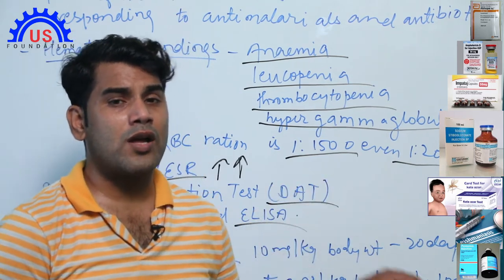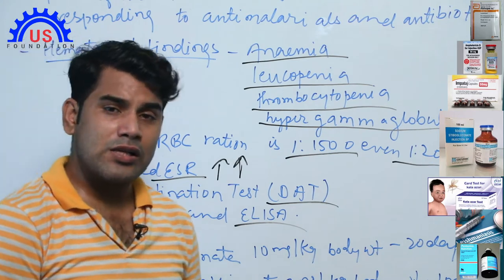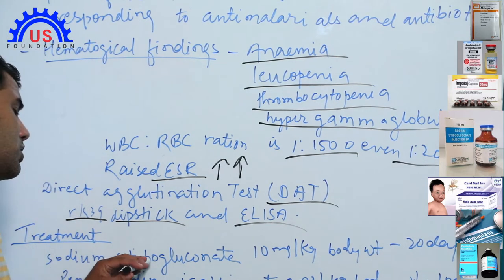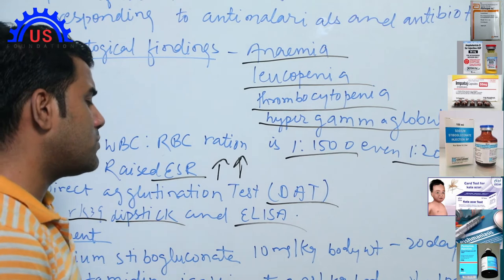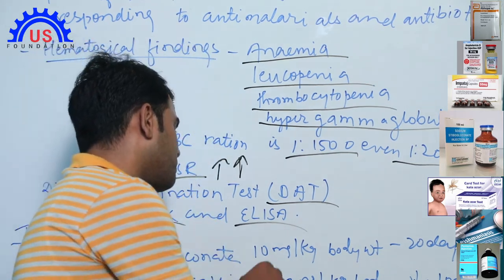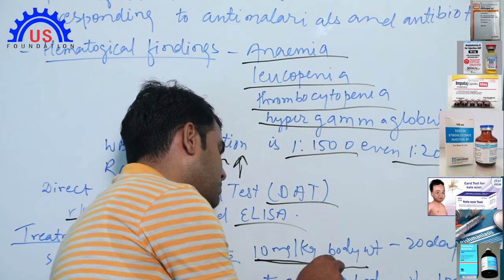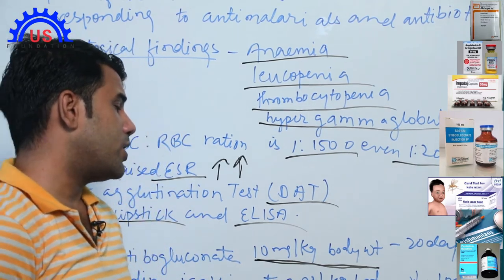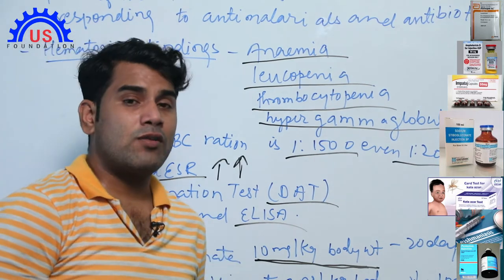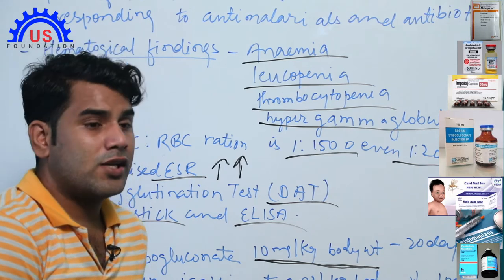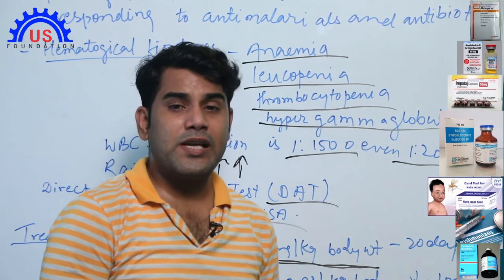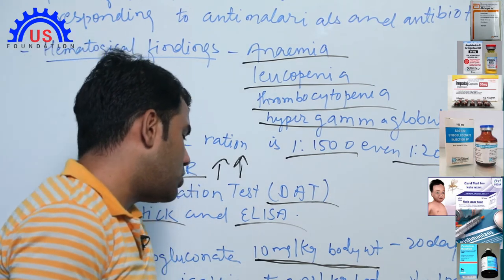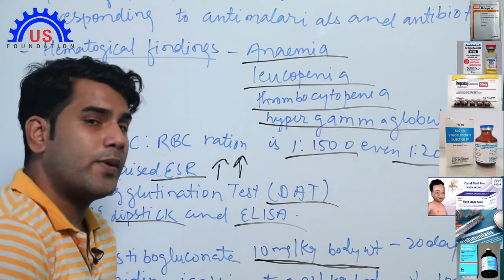Now coming to the medicines used for Kalajar — it is slow growing, so treatment is long-term. There is no one or two-day medicine; it runs for 10–20 days, 3–4 weeks. The most common drug is Sodium stibogluconate: 10 mg per kg body weight for 20 days. For example, if a patient weighs 50 kg, the dose is 500 mg; for 60 kg, it is 600 mg. The dose is calculated according to body weight and continued for 20 days.